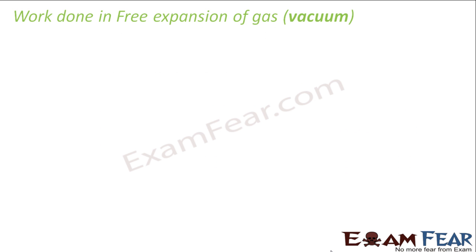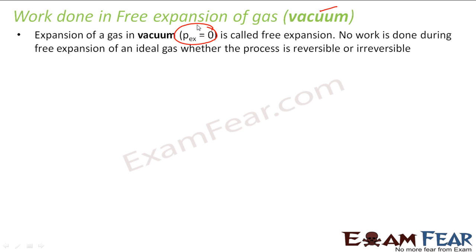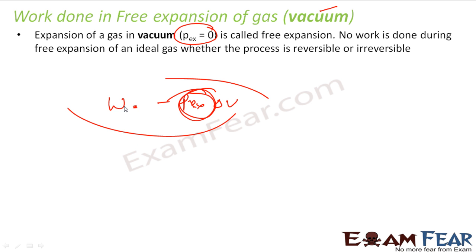Work done in free expansion of gas in vacuum — can you guess what it will be? Work done in free expansion of gas in vacuum is zero. Why? Because the external pressure is zero. The formula we had was: work = minus P_external times delta V for non-reversible. Since P_external is zero, that is why it is called free expansion — there is no work done.